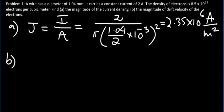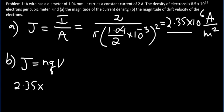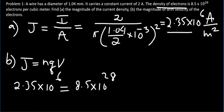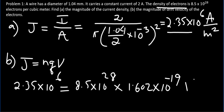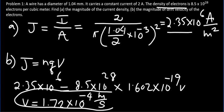Part B: What is the magnitude of the drift velocity? The electric current density in terms of drift velocity is J = nQv. Since the magnitude of J has been determined as 2.35 × 10⁶, n is given as 8.5 × 10²⁸, and the charge of each electron is 1.602 × 10⁻¹⁹ coulombs, we can determine the magnitude of the drift velocity to be 1.72 × 10⁻⁴ meter per second. This is a typical order of magnitude for drift velocity.